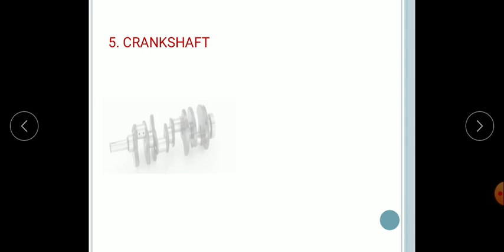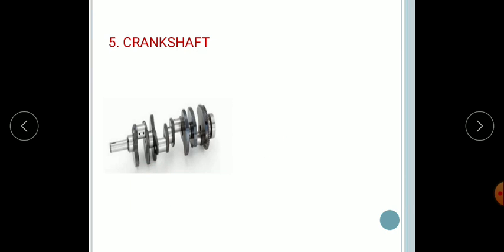Next, the crankshaft. The crankshaft is made up of steel. It is located at the bottom end of the cylinder block. It transmits the reciprocating motion of the piston into rotary motion, and this rotary motion is used to rotate the wheels of the vehicle.